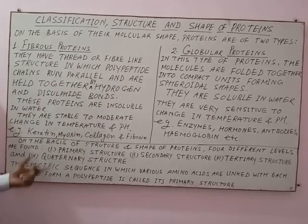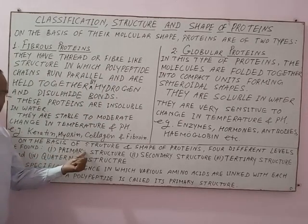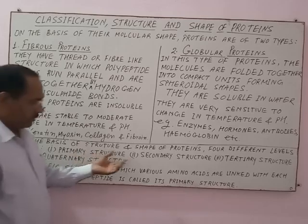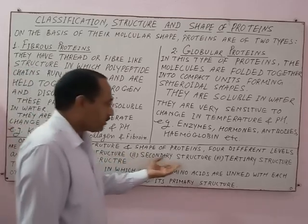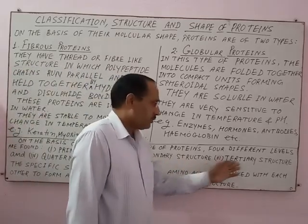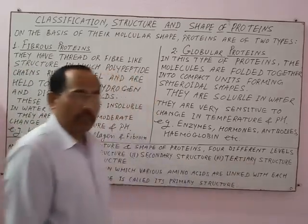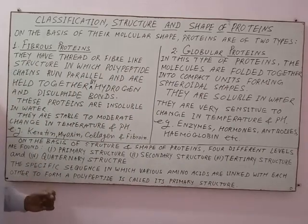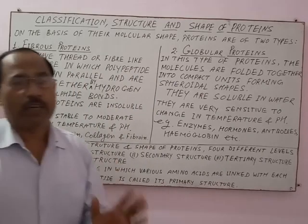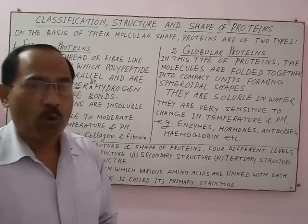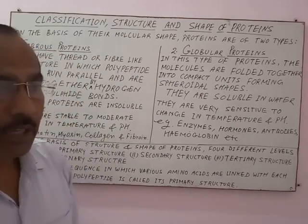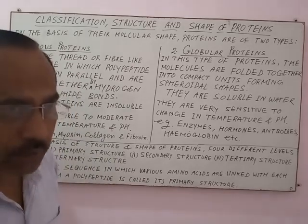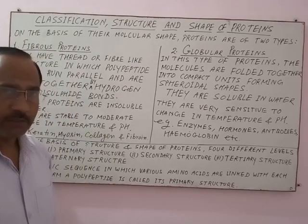What are these four levels? Primary structure, secondary structure, tertiary structure, and quaternary structure. These are four different levels of structural organization in proteins.